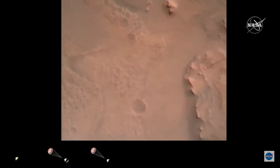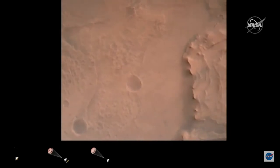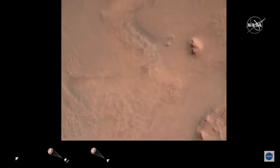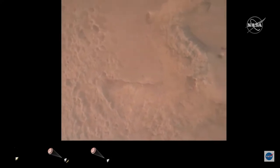Perseverance is continuing to descend on the parachute. We are coming upon the initialization of terrain relative navigation and subsequently the priming of the landing engines. Our current velocity is about 90 meters per second at an altitude of 4.2 kilometers.